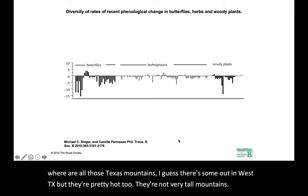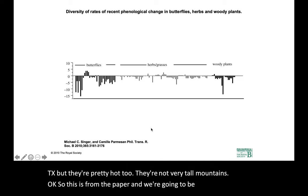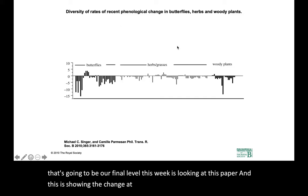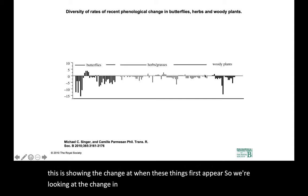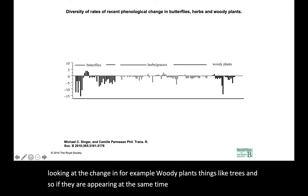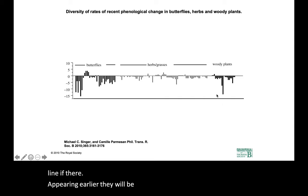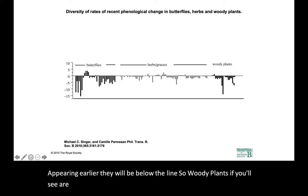This is from the paper, and we're going to be looking at the paper. This is showing the change in when things first appear. We're looking at the change for woody plants — things like trees. If they're appearing at the same time as they did 50 years ago, they'll be right on the line. If they're appearing later, they'll be above the line. If they're appearing earlier, they'll be below the line.